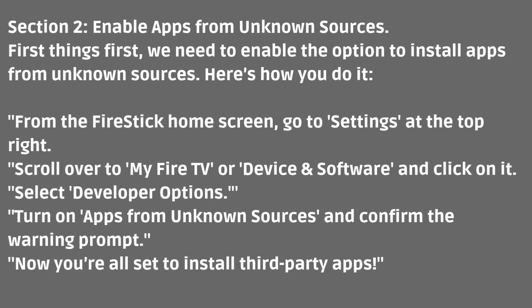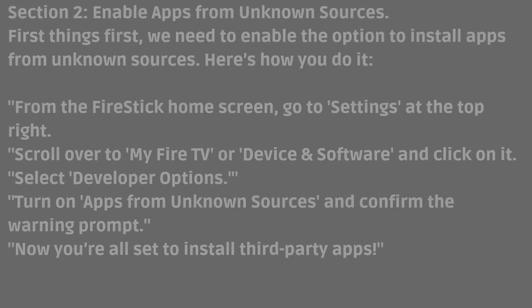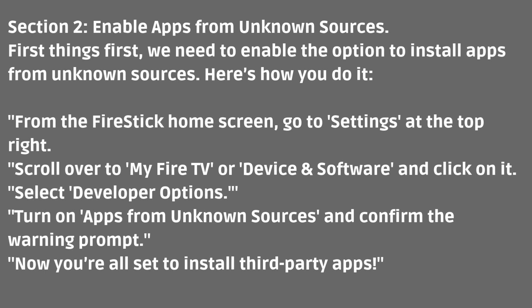Section 2: Enable apps from unknown sources. First things first, we need to enable the option to install apps from unknown sources. From the Fire Stick home screen, go to Settings at the top right. Scroll over to My Fire TV or Device and Software and click on it. Select Developer Options. Turn on Apps from Unknown Sources and confirm the warning prompt. Now you're all set to install third-party apps.